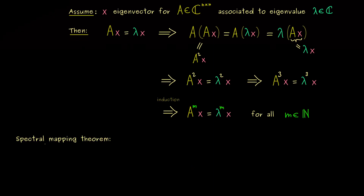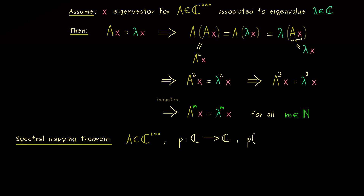The theorem tells us what happens with the spectrum of a matrix under a map. For our context, this map will be a polynomial p. As always, everything is complex-valued, so we map ℂ into ℂ, and the variable for the polynomial we can call z.